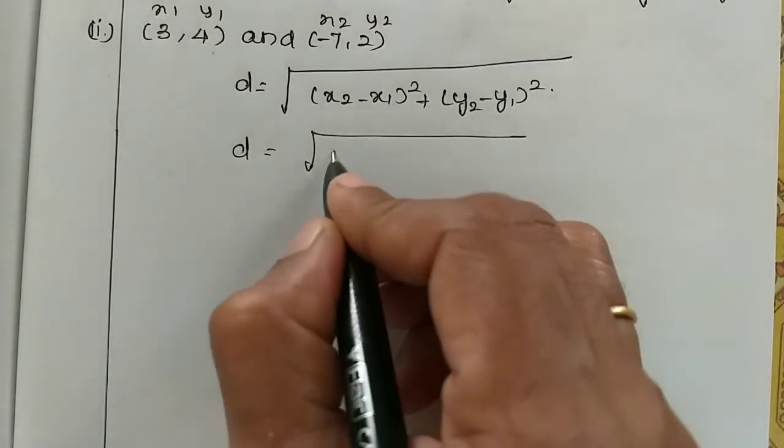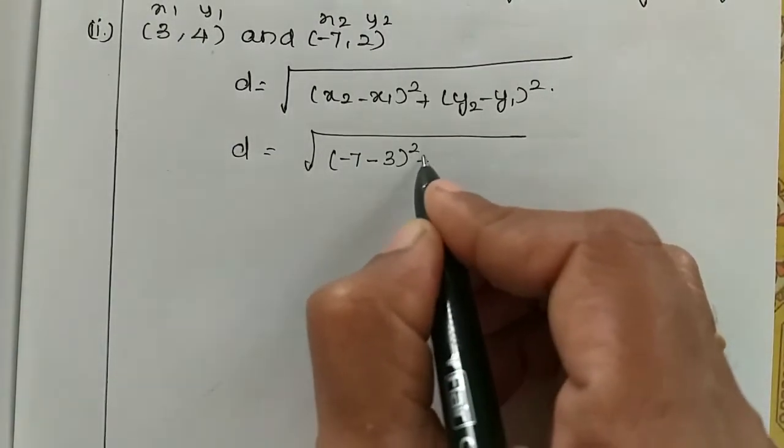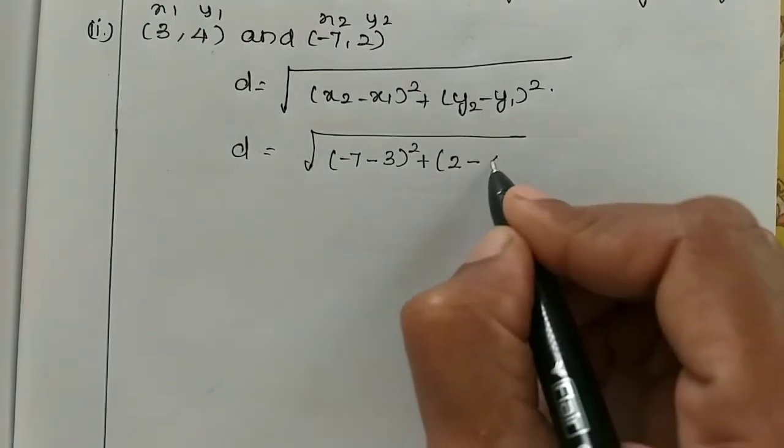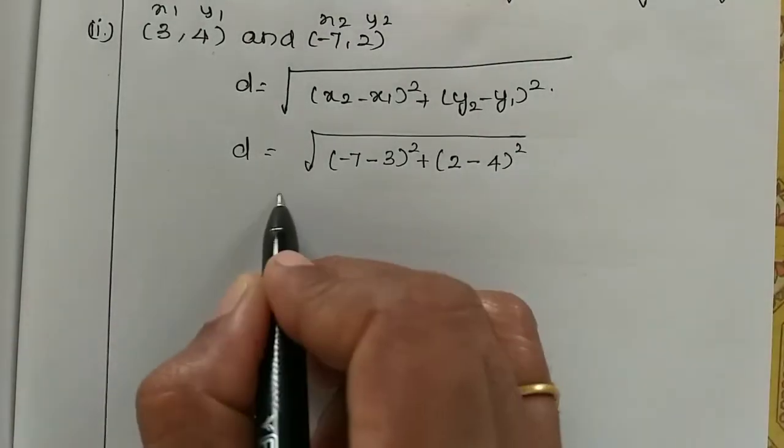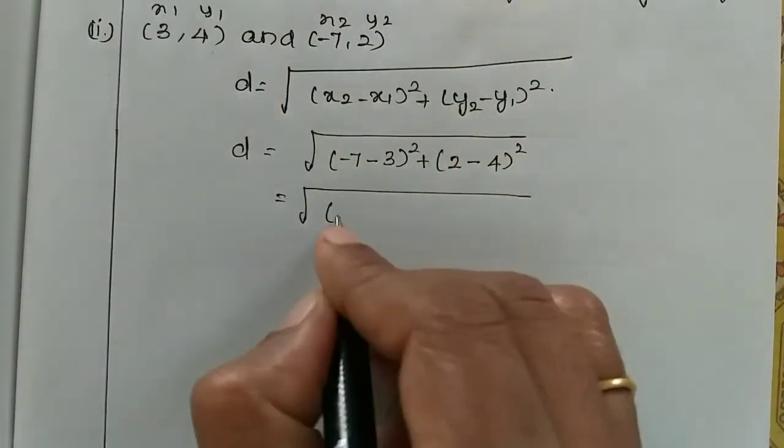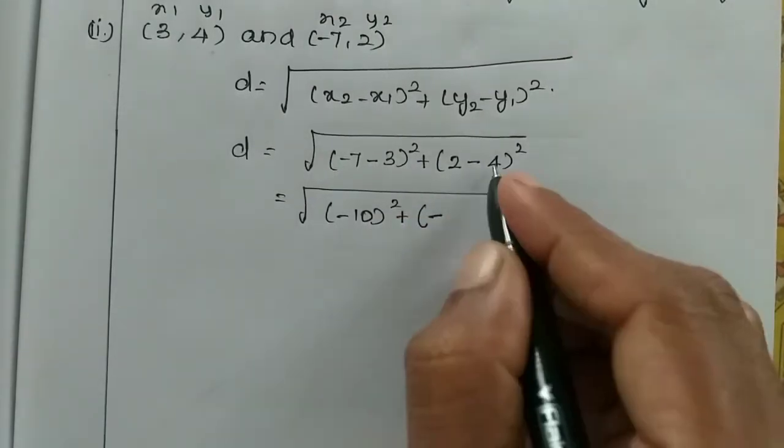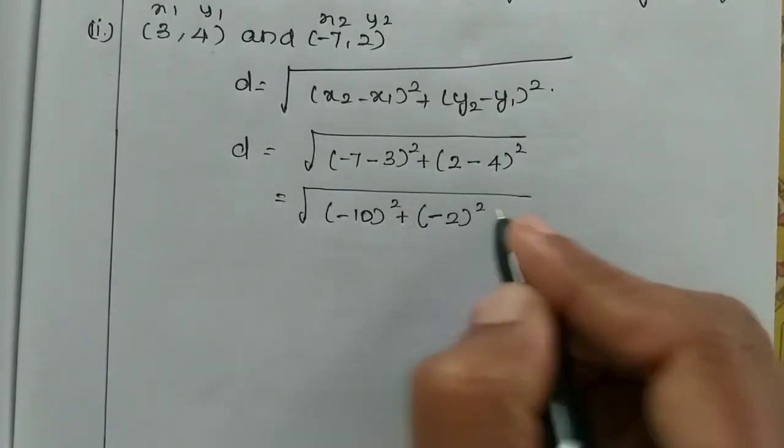So which is equal to root of x2 minus 7 minus x1 minus 3 the whole square plus y2 is 2 minus y1 is 4 the whole square. So which is equal to root of (-3 minus 7) the whole square plus, this is bigger number symbol minus 4 minus 2 is 2 the whole square.